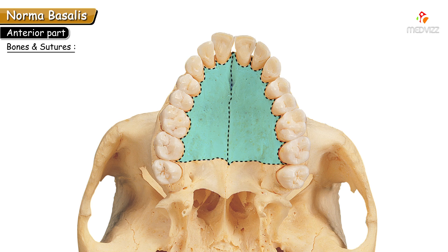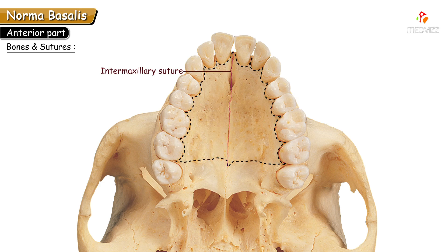The anterior two-thirds of the hard palate is formed by the palatine process of the maxillae. There are two maxillae — right and left — and these project to form a palatine process which meets with each other at the intermaxillary suture, forming the anterior two-thirds of the hard palate.